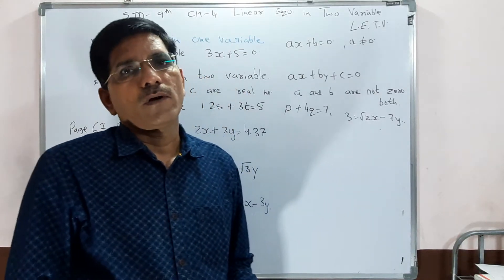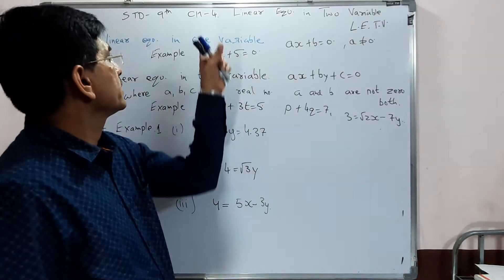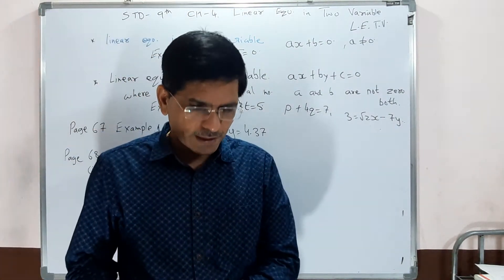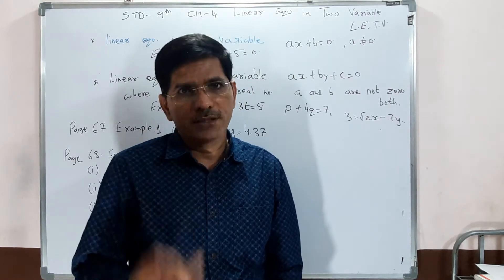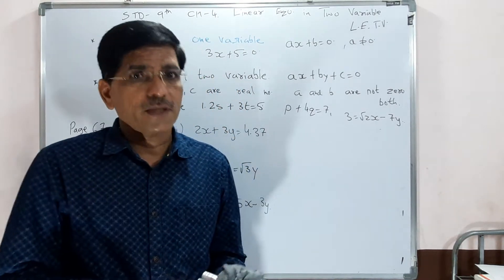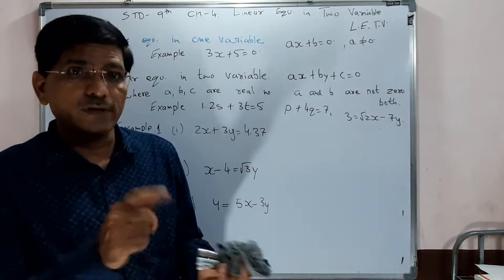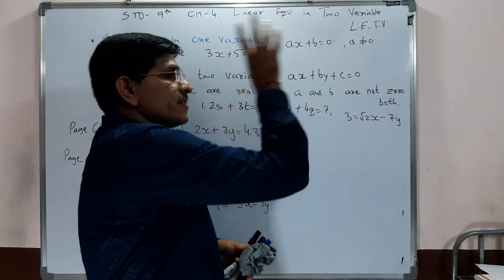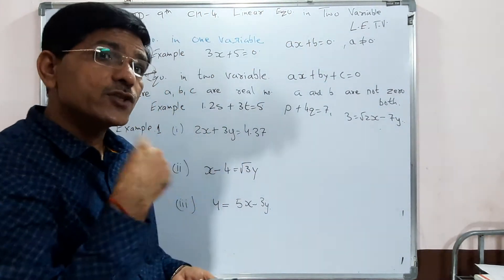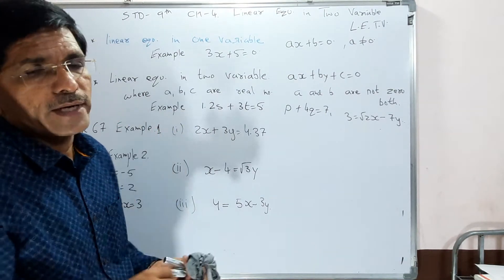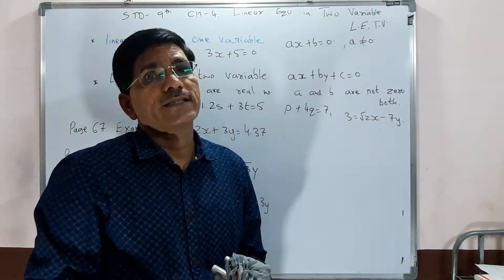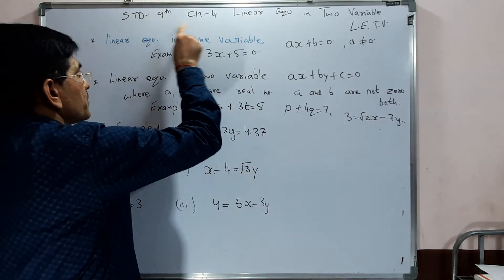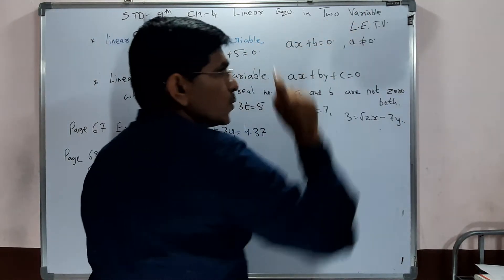Good morning friends. Now we want to start a new chapter, that is chapter number 4. In the last 3 lectures we have completed chapter number 3. Now, if you understand chapter 3 properly, then we go on to the 4th chapter, because again it is related with equations — coordinate geometry in which 2 x and y variables are there. So chapter number 4: linear equation in 2 variables.